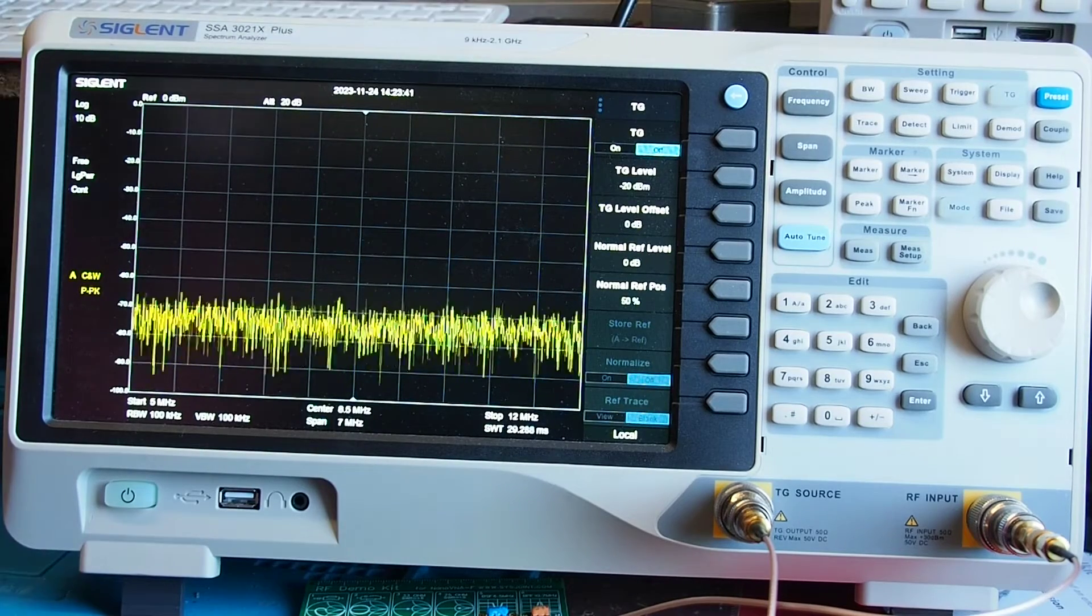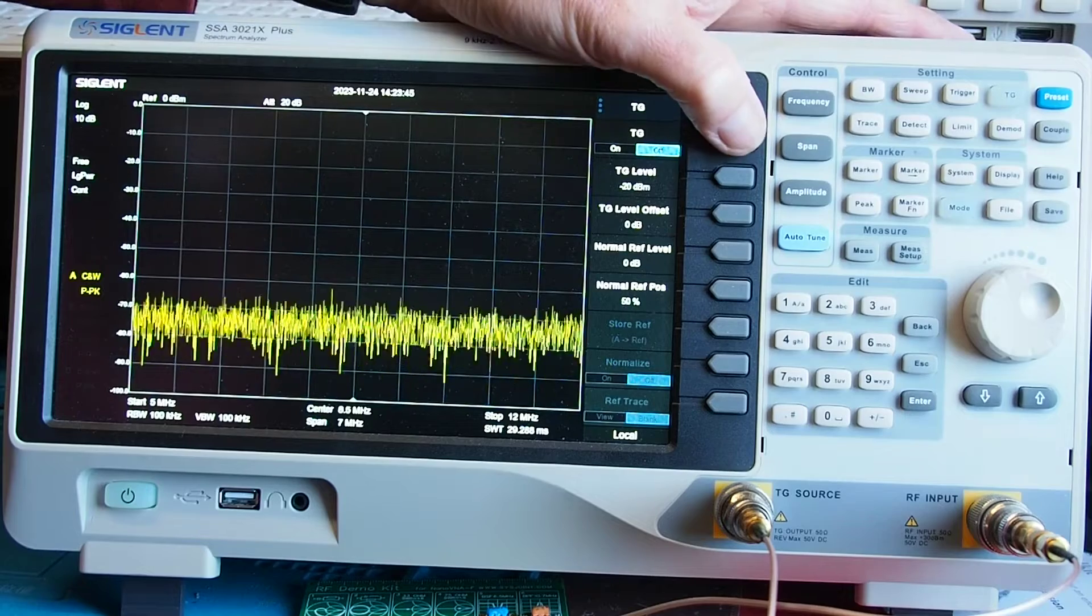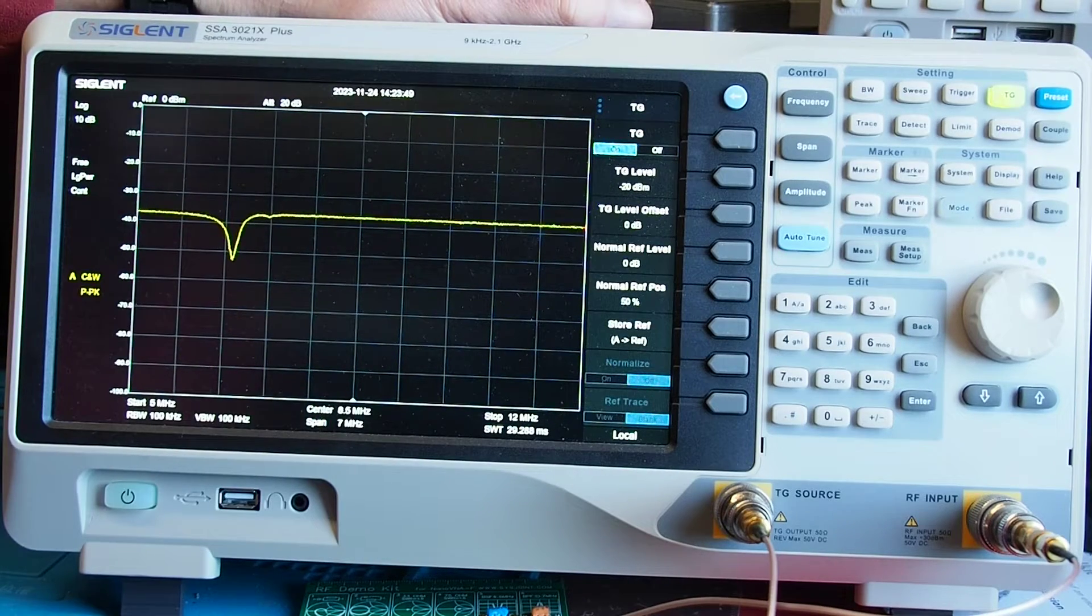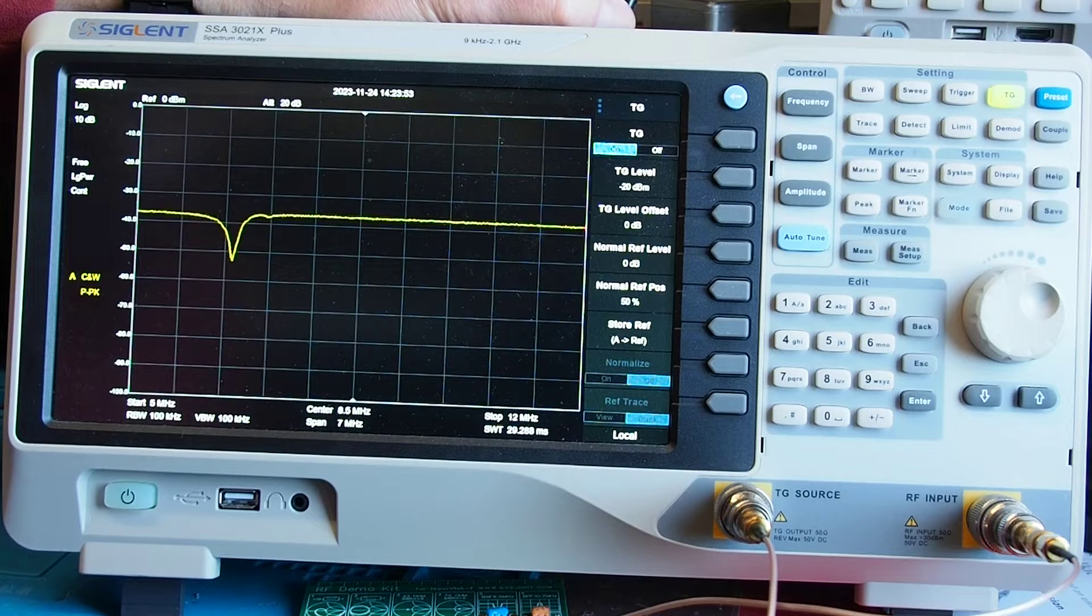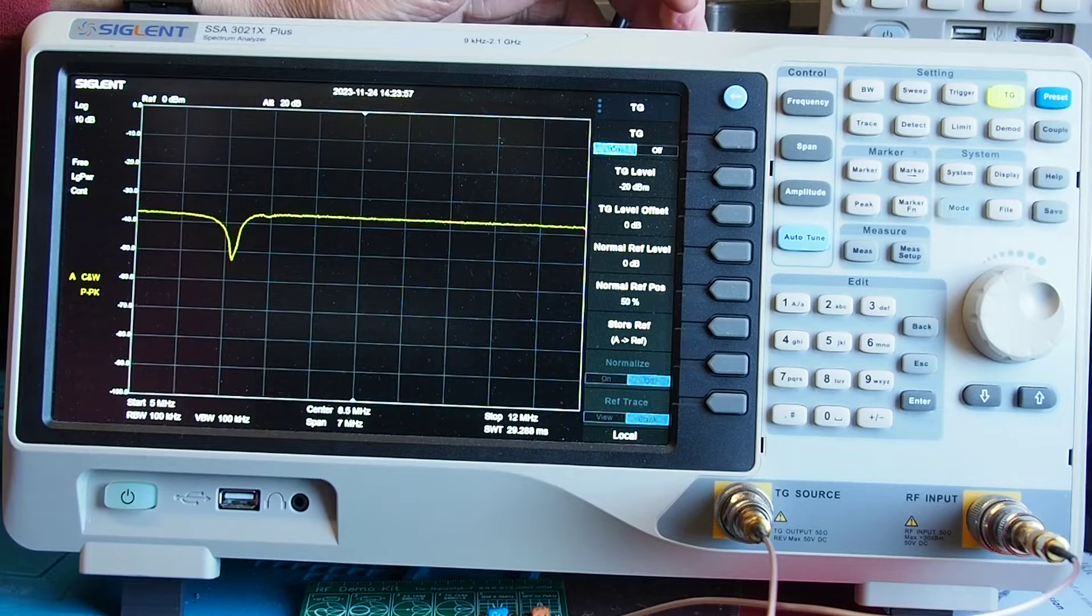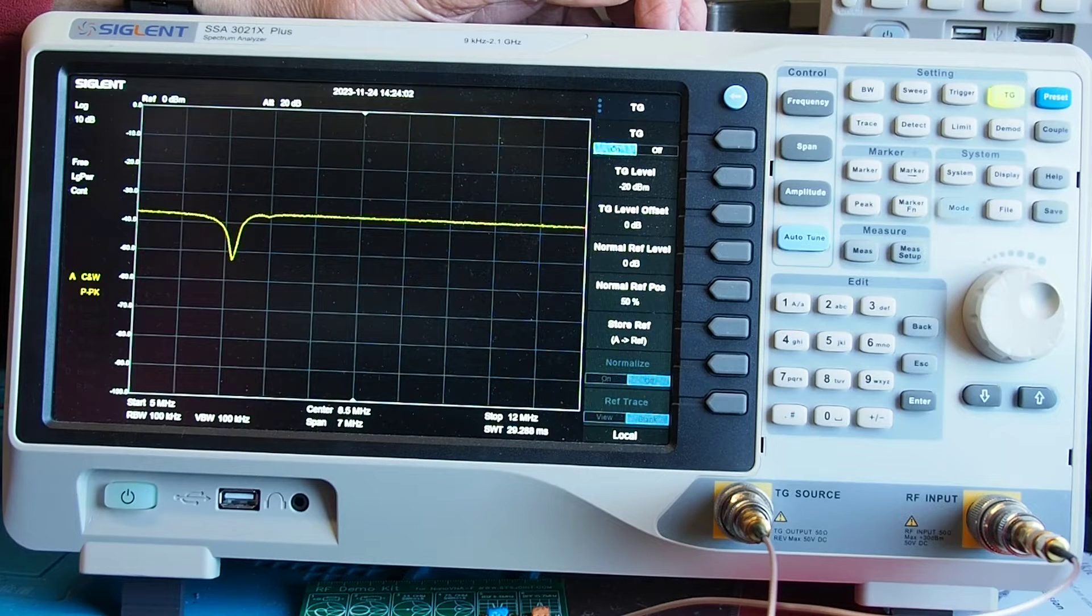Okay so back to the tracking generator now so I've now got the filter connected up as I've said so we'll go back to tracking generator and we'll turn the tracking generator on and instantly we've got that filter response as you can see. That's a very different kind of thing to what we saw when we were using the noise bridge so clearly it's a very handy piece of kit is the tracking generator.